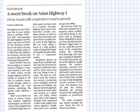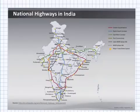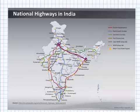The next article is a general one, but we should remember the major road corridors for our prelims examination. In the map, the Golden Quadrilateral is shown in red — it connects Delhi, Kolkata, Chennai, Bangalore, and Mumbai. These four major cities are connected by the Golden Quadrilateral.